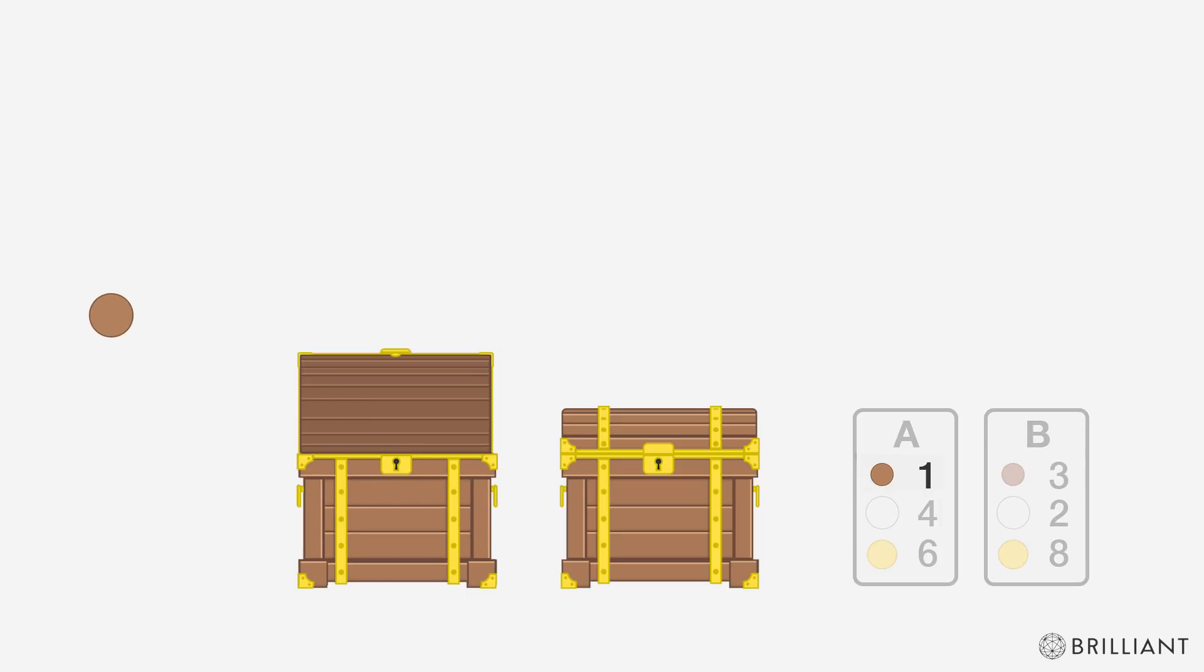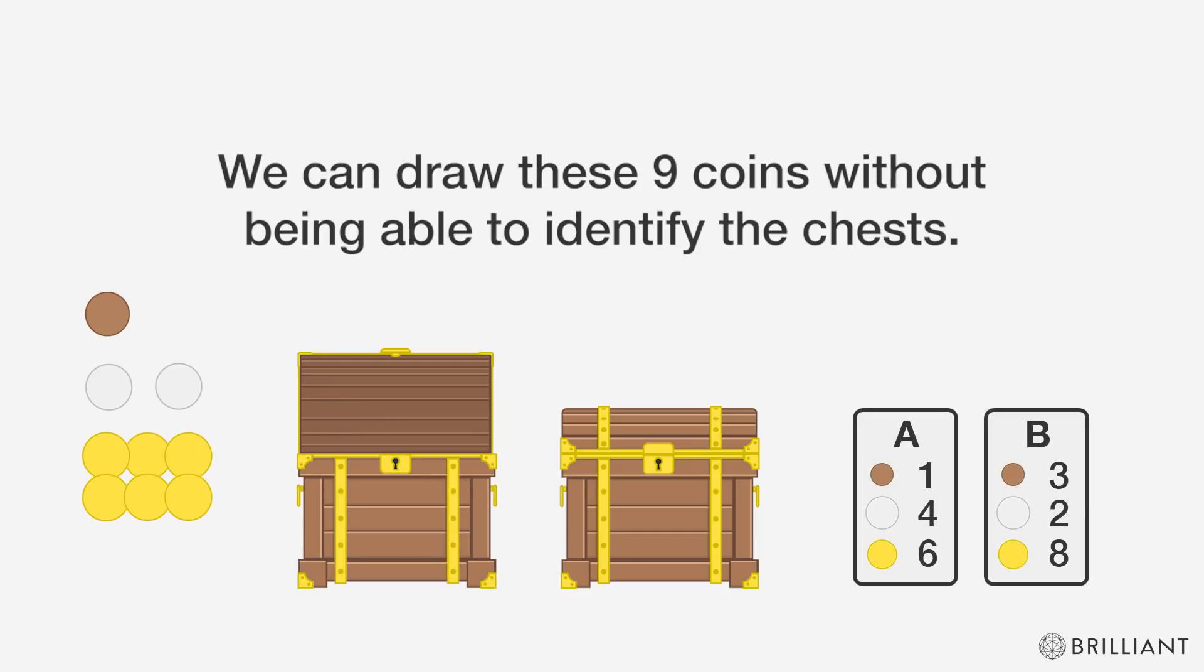That's one copper coin, two silver coins, and six gold coins. We can draw these nine coins without being able to identify the chests.